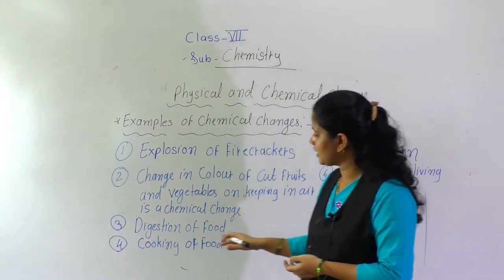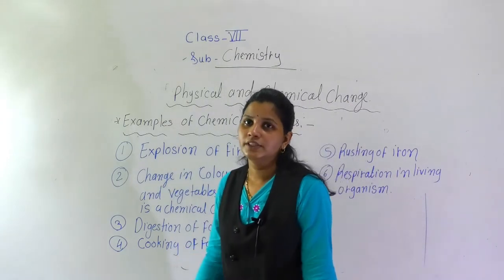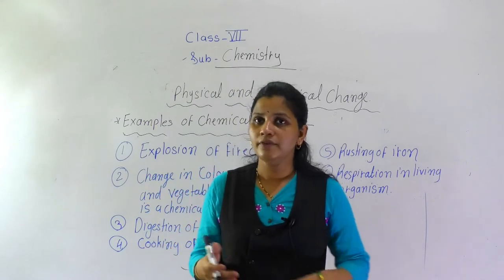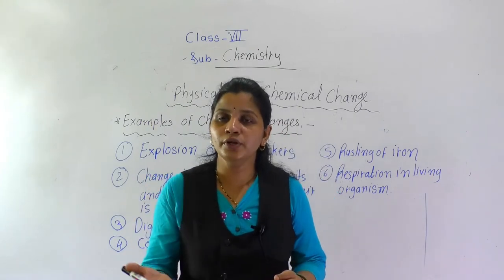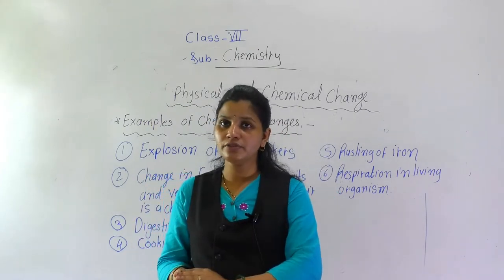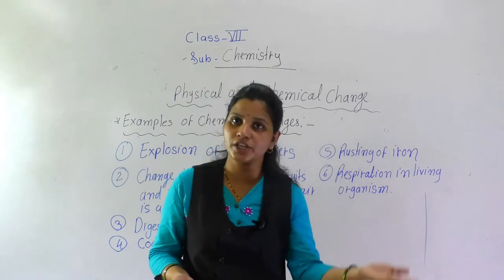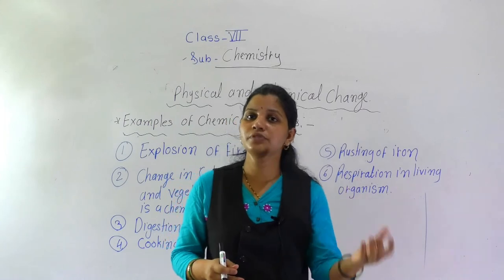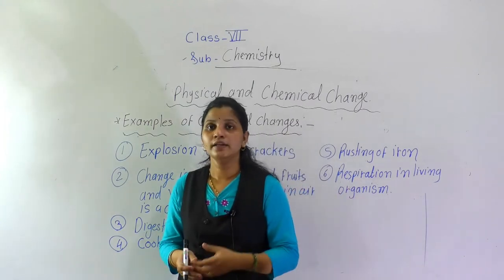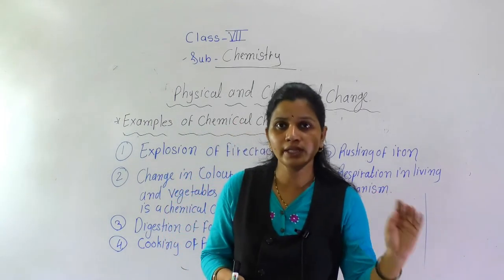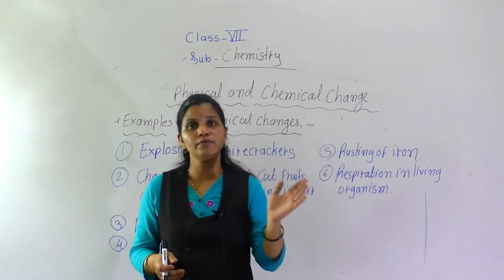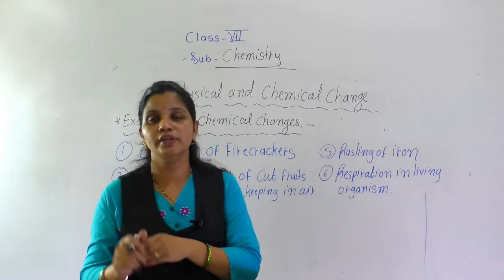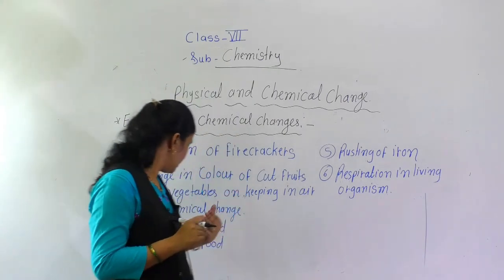The next example is the cooking of food. Your mother takes raw materials to cook food, and when she cooks, all the properties of those raw materials change completely. After cooking, a totally new substance is formed, and that new substance has characteristics different from the original. So this is also an example of chemical change.